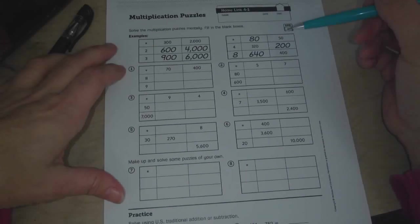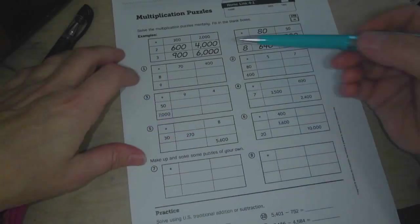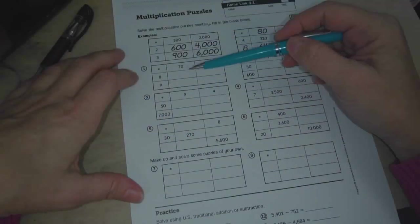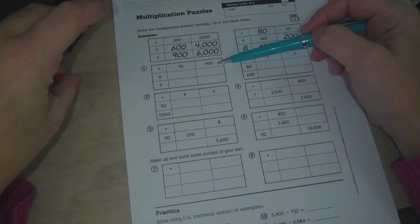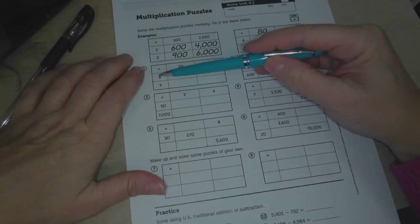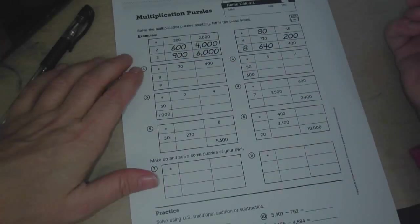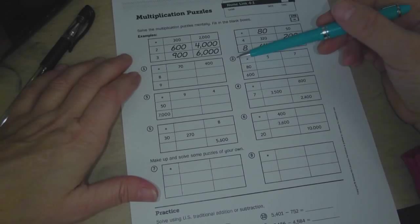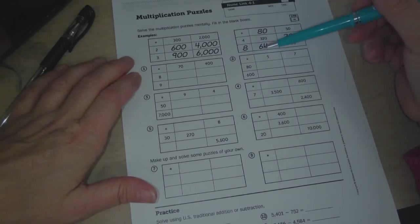So, let's look at number 1. The information it gives us is 8 and 9, and then 70 and 400. So, let's do 8 times 70 first. And if you want, you can pause this video and do it on your own, and then come back and see if you got the right answer.